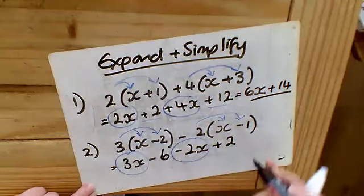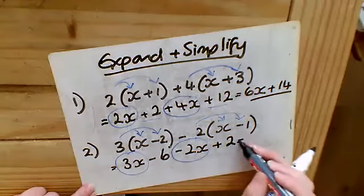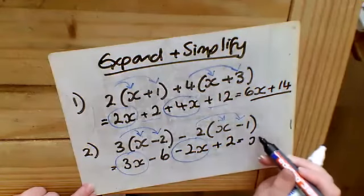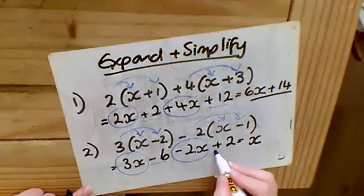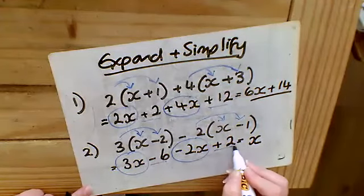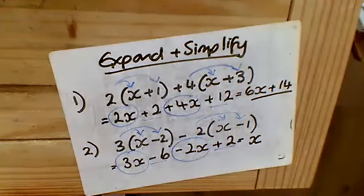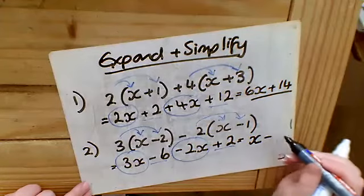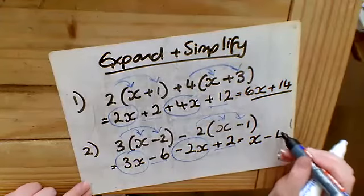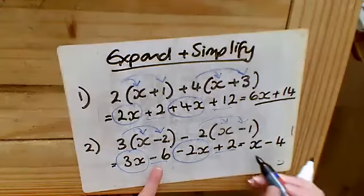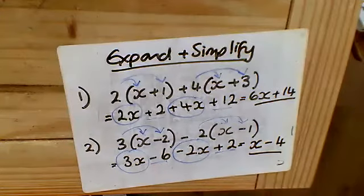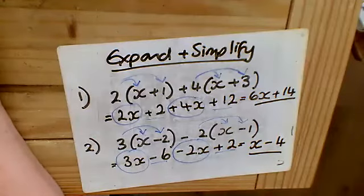Now simplifying — gathering like terms — I've got 3x minus 2x, making sure to include the sign, which leaves me just with 1x. Then negative 6 plus 2 gives me negative 4. So it's important we know how to work with negative numbers to get the correct answer. Any questions, please let me know.